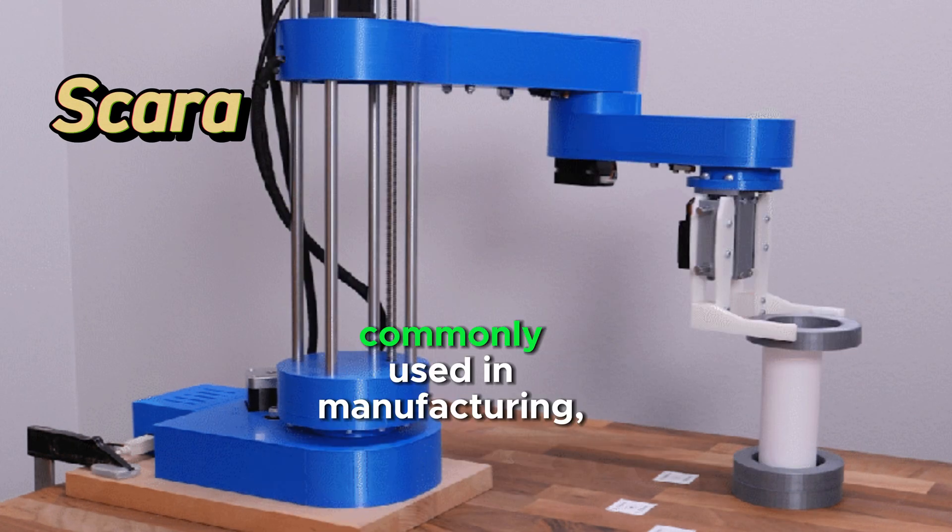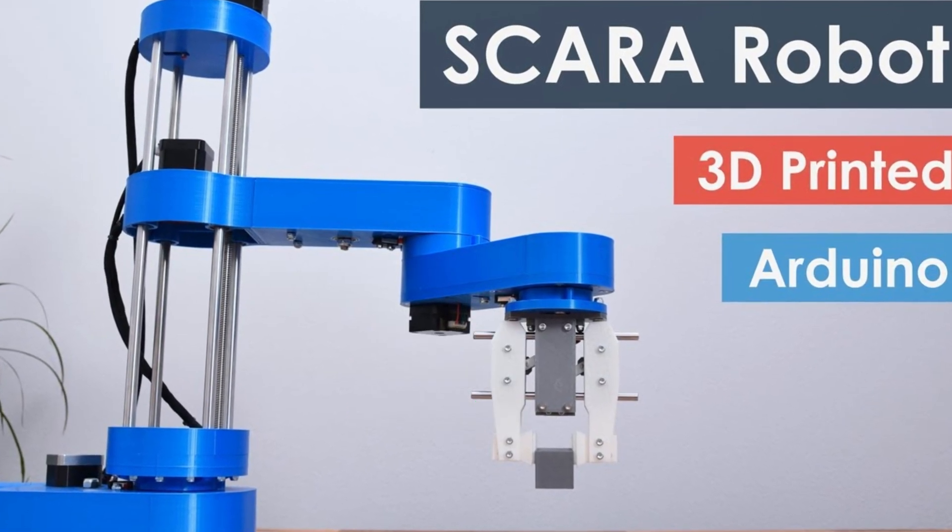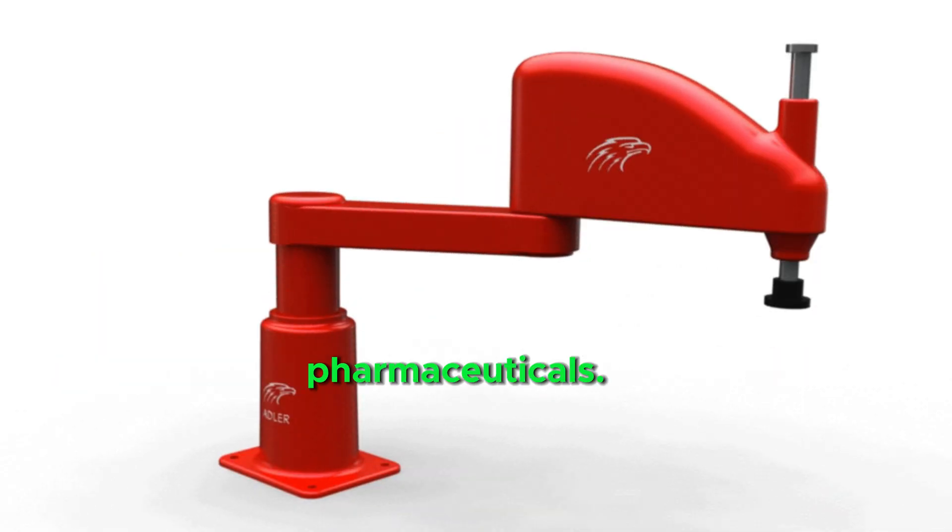SCARA is an industrial robot commonly used in manufacturing, pick-and-place tasks, and assembly lines. They are used in electronics, food processing, and pharmaceuticals.